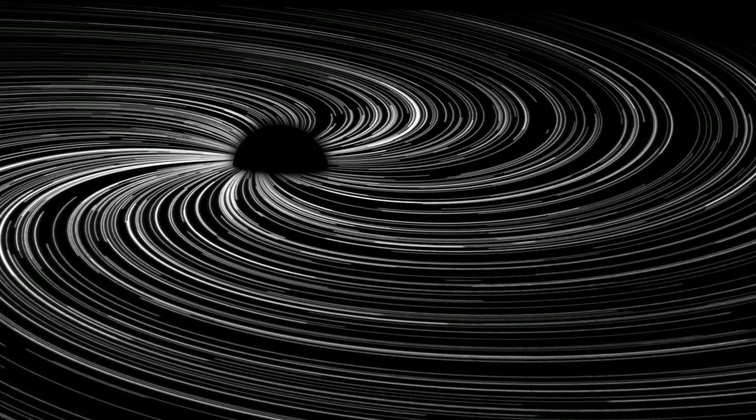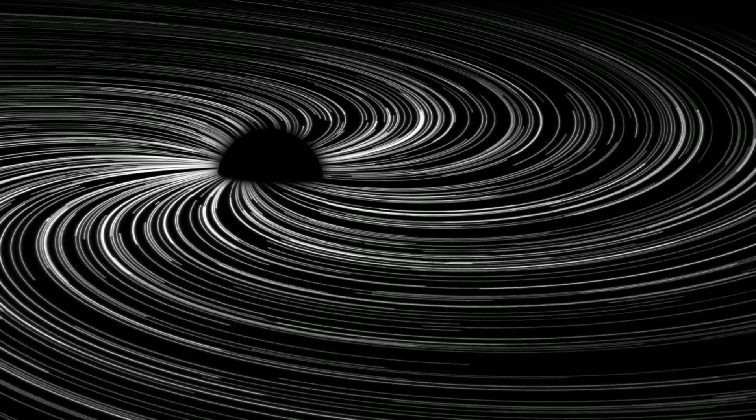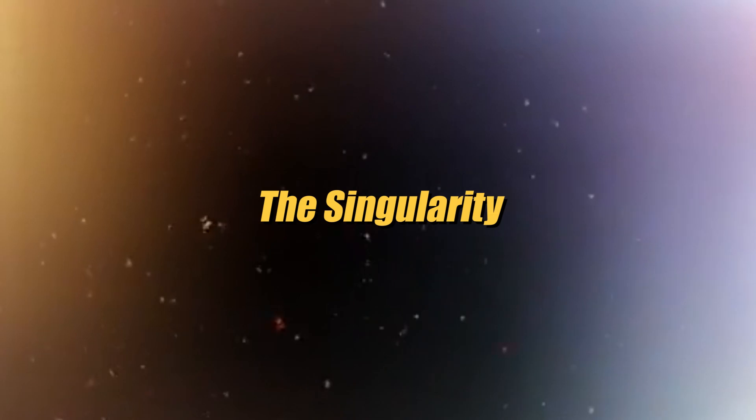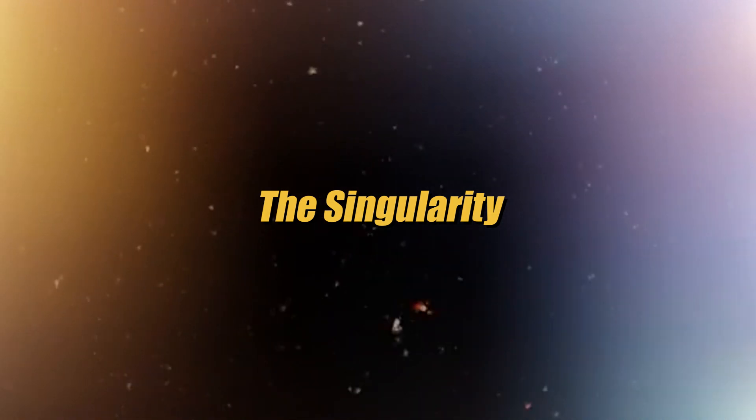The second layer is the photon sphere, which is the region where light orbits around the black hole. Any light entering this region will be trapped and will not be able to escape the gravitational pull of the black hole. Finally, the third layer is the singularity. This is where everything that enters the black hole is astronomically compressed into a point of infinite density. The singularity is a point in space-time where the laws of physics as we know them break down.